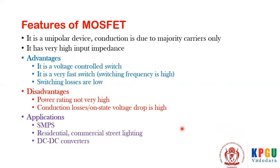Typical applications are low power rating SMPS, residential and commercial street lighting, and DC-DC converters. That's all about the quick review of MOSFET. Please keep in mind this is for quick review from an exam point of view; for detailed understanding you should refer to a good textbook. In the next section I am going to discuss IGBT. Thank you.